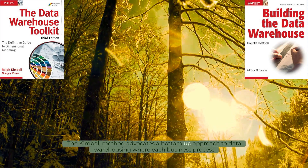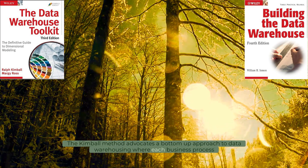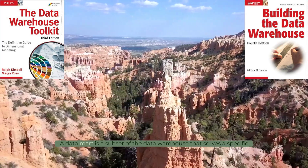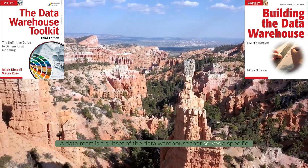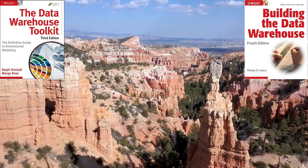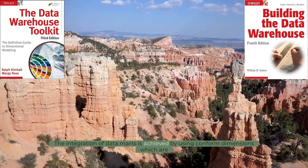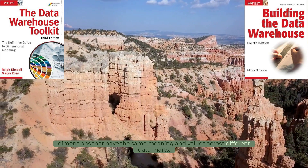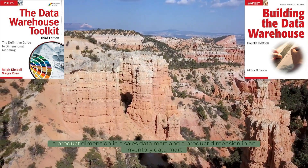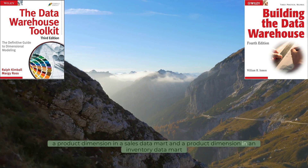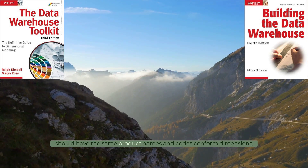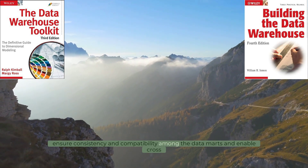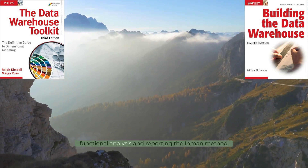The Kimball method advocates a bottom-up approach to data warehousing, where each business process is modeled as a separate data mart, and then integrated into a larger data warehouse. A data mart is a subset of the data warehouse that serves a specific business function or user group. The integration of data marts is achieved by using conformed dimensions, which are dimensions that have the same meaning and values across different data marts. For example, a product dimension in a sales data mart and a product dimension in an inventory data mart should have the same product names and codes.